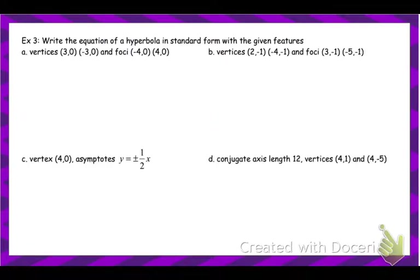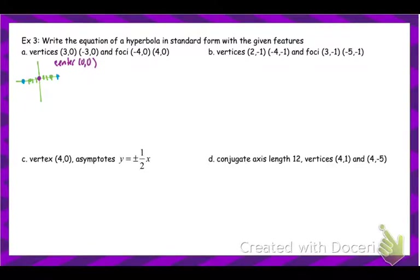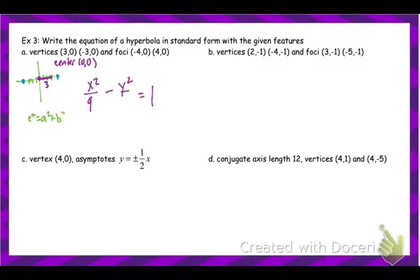Now let's look at writing equations. Graphing helps visualize this. Given vertices and foci, the center is clearly (0, 0). Since the vertices are left and right, it opens left and right, so the form is x² − y². The distance to the vertex is 3, so 9 goes below x². To find b²: c² = a² + b², giving 16 = 9 + b², so b² = 7. That goes in the equation.